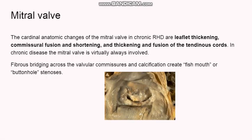Going to the mitral valve lesions. Mitral stenosis takes place in rheumatic heart disease. The mitral valve is virtually always involved in rheumatic heart disease. In chronic rheumatic heart disease, there will be leaflet thickening of the valves, commissural fusion, shortening, and thickening and fusion of the tendinous cords — because of fibrosis from repeated chronic inflammation. Because of this fibrosis, the valve changes its shape, and it becomes typically known as fish mouth or buttonhole stenosis, which takes place in rheumatic heart disease.